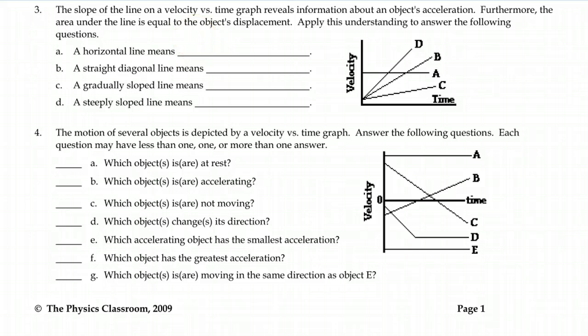The slope of a velocity time graph tells you rise over run. That's velocity divided by time. That's the rate of change of velocity. So the slope tells you the acceleration.